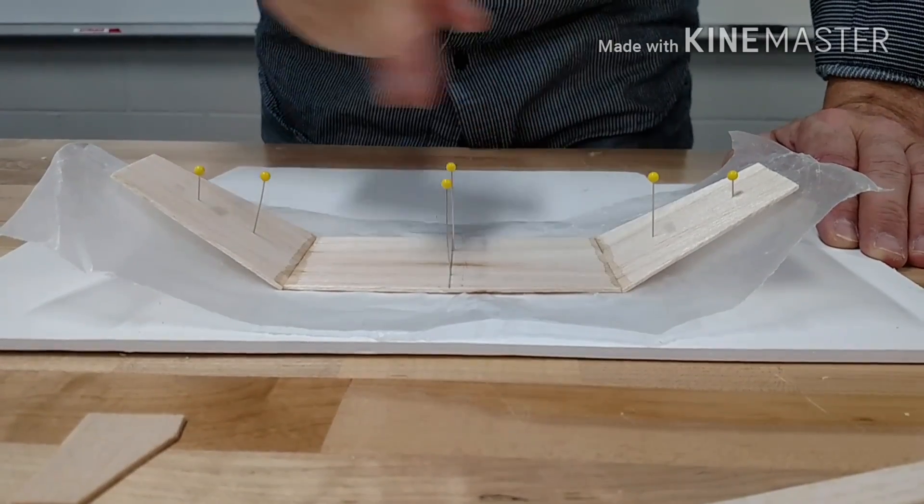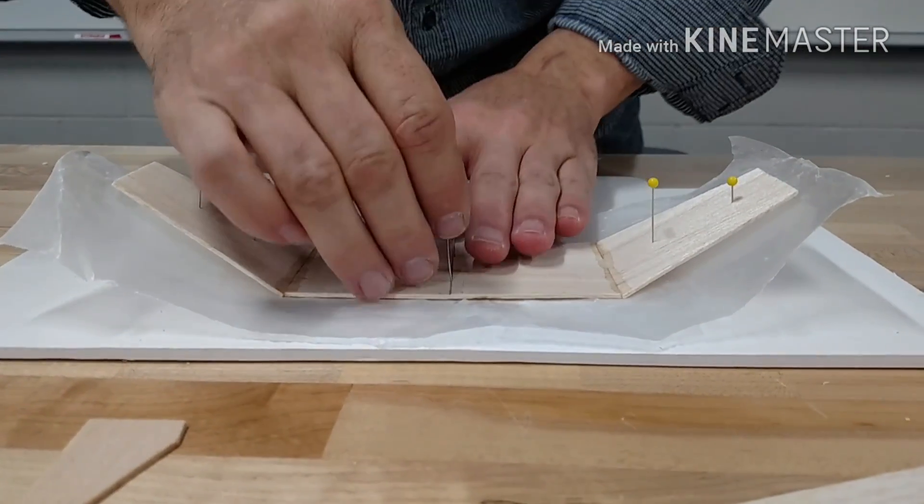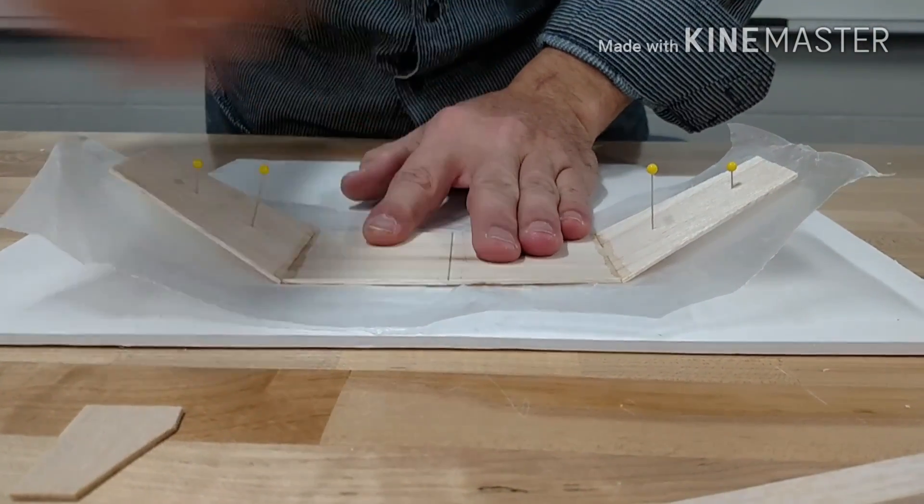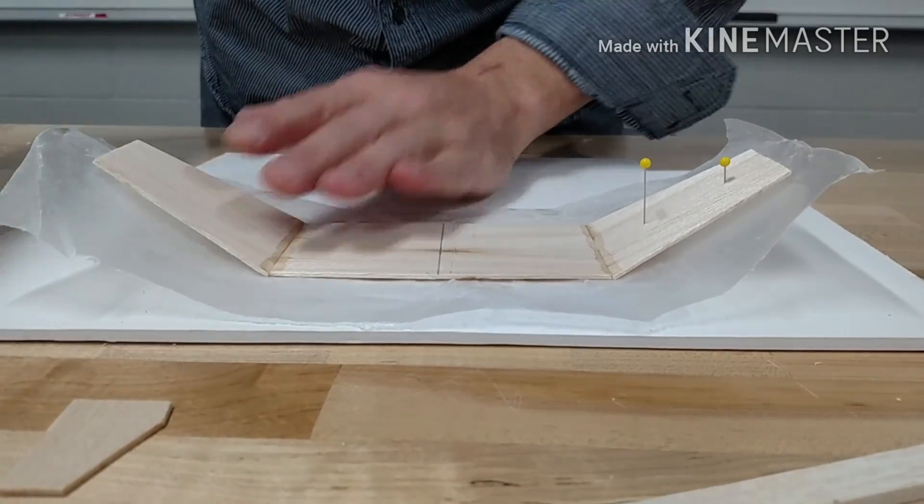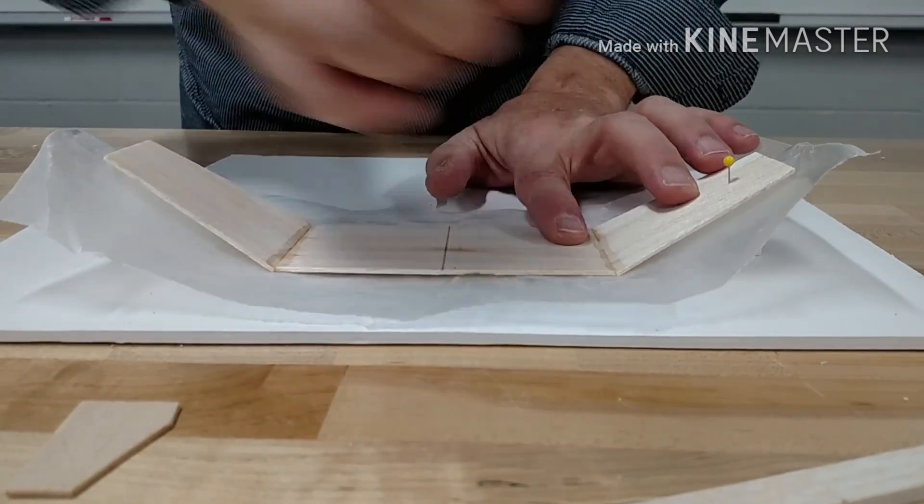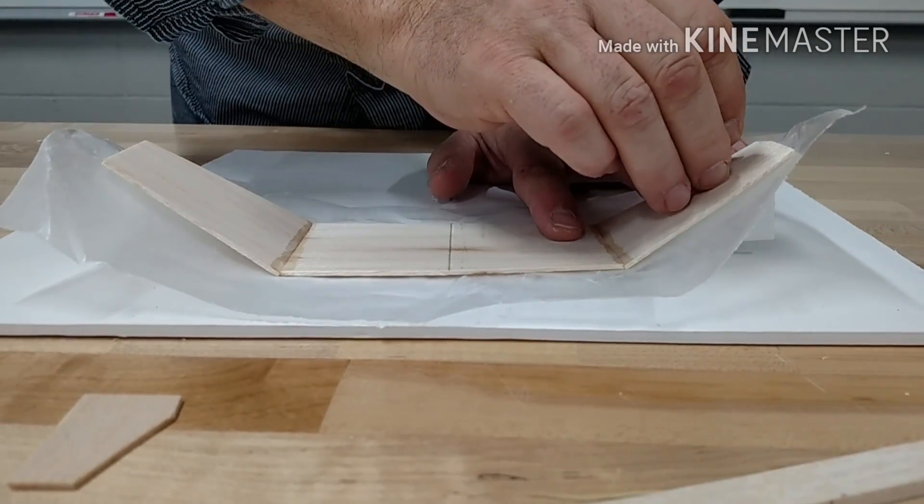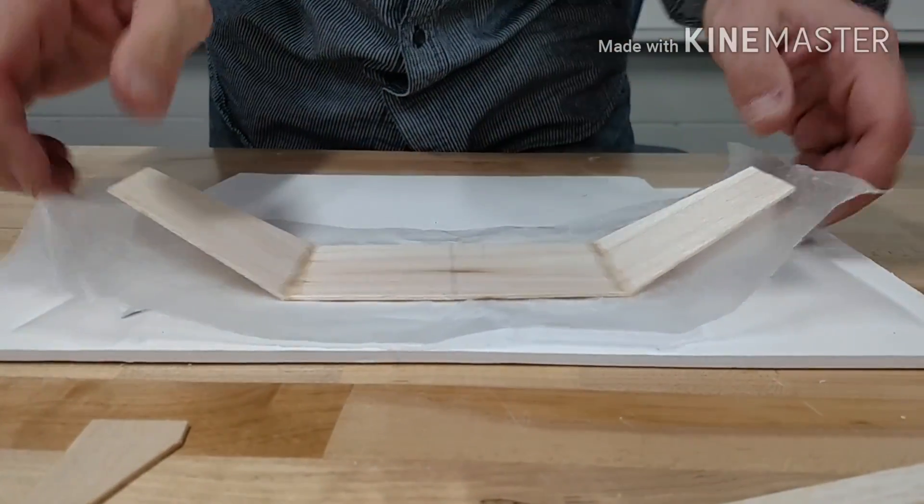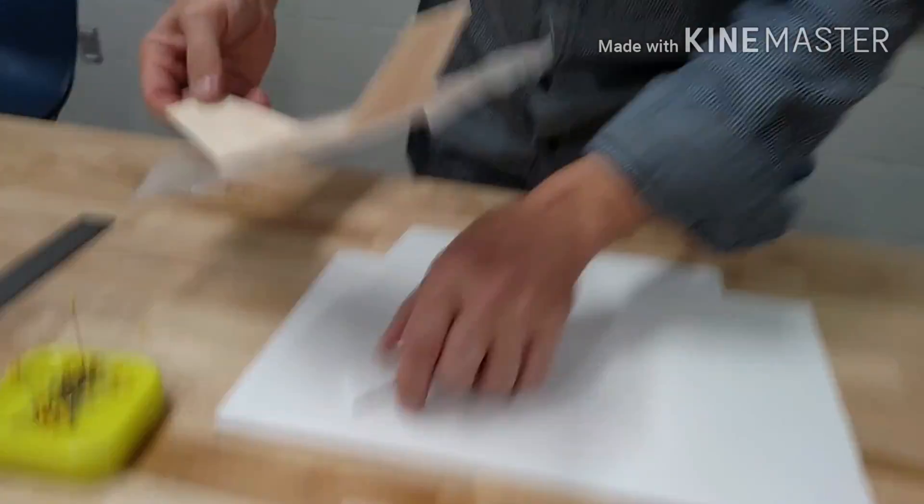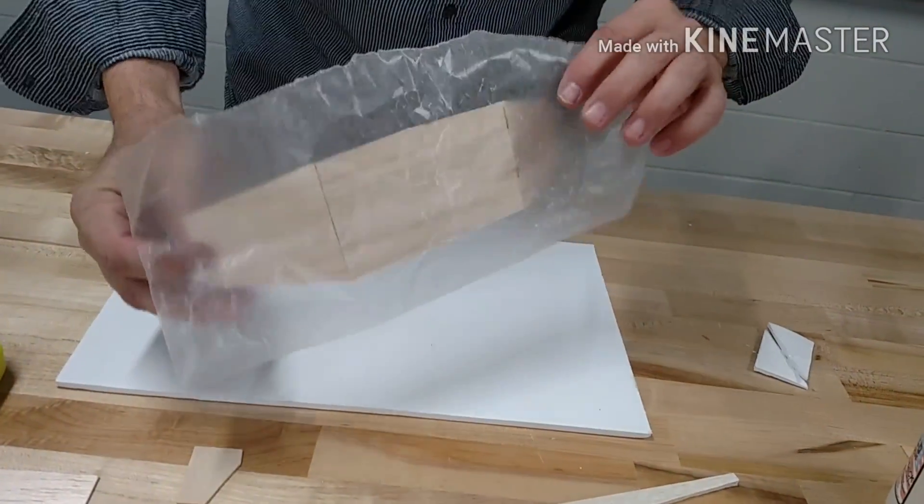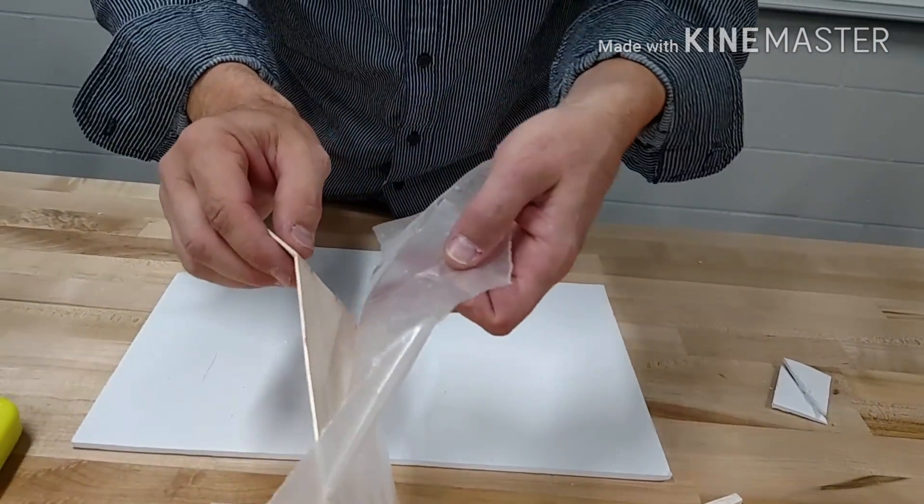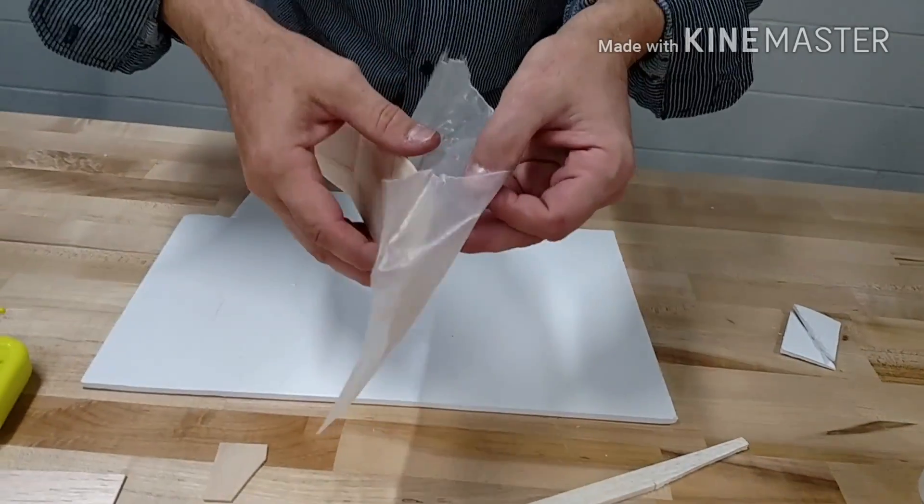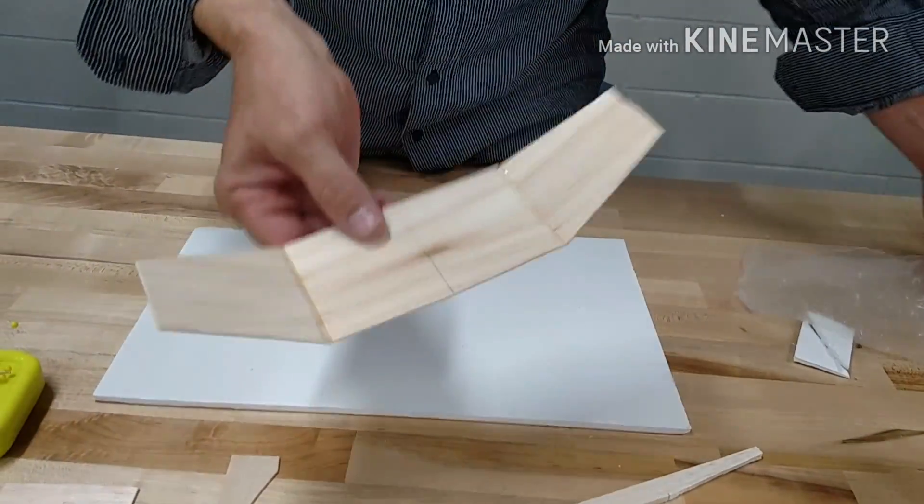Now all the super glue is dry on the tips of my wings, and I'm going to go ahead and take it apart. Just take the pins out very carefully so I don't pull the tips off or anything. They should be pretty good. My stick has stuck to the wax paper a little bit, which is fine, and that's what it's for. Then just peel it off carefully and you have your wing.